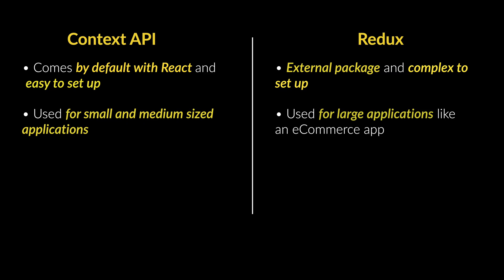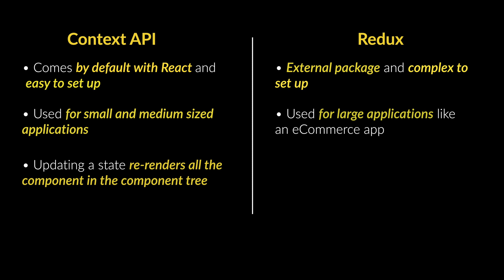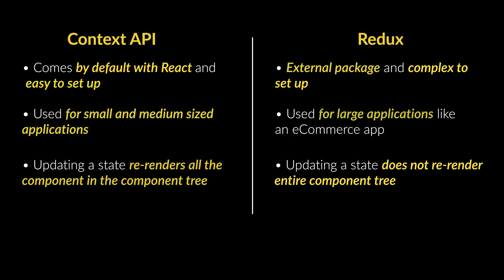One of the major differences between the Context API and Redux is their performance behavior. With the Context API, updating a state re-renders all the components in the component tree, which leads to performance issues. With Redux, updating a state does not re-render the entire component tree — it only re-renders the components subscribed to that Redux state. Because of this, a good use case for the Context API is managing themes, where switching is infrequent, while cart data in an e-commerce app should be managed with Redux.